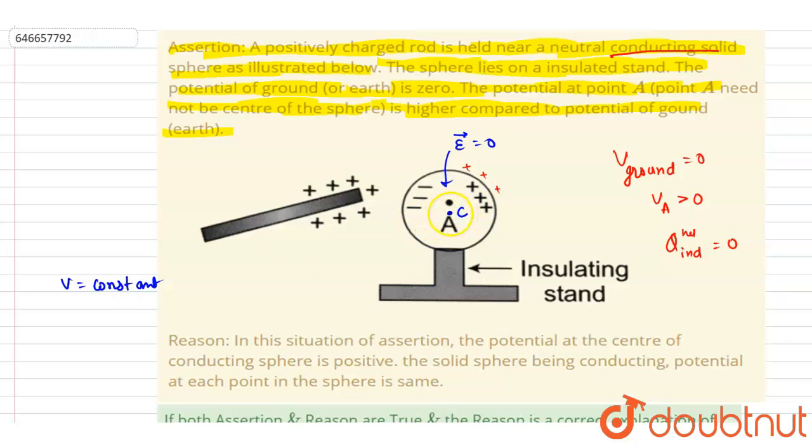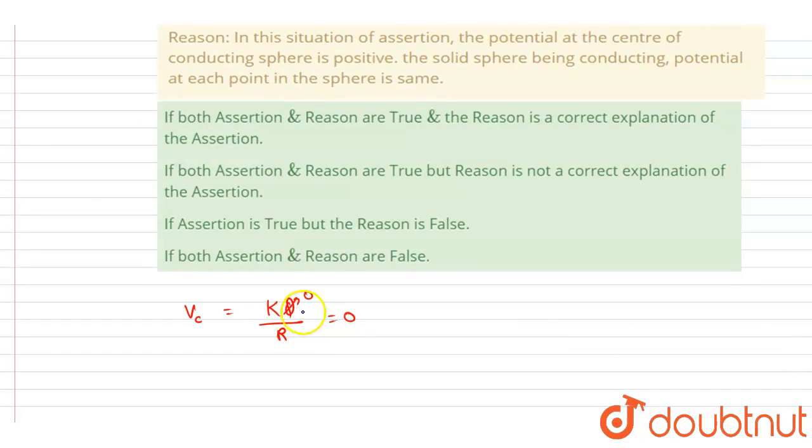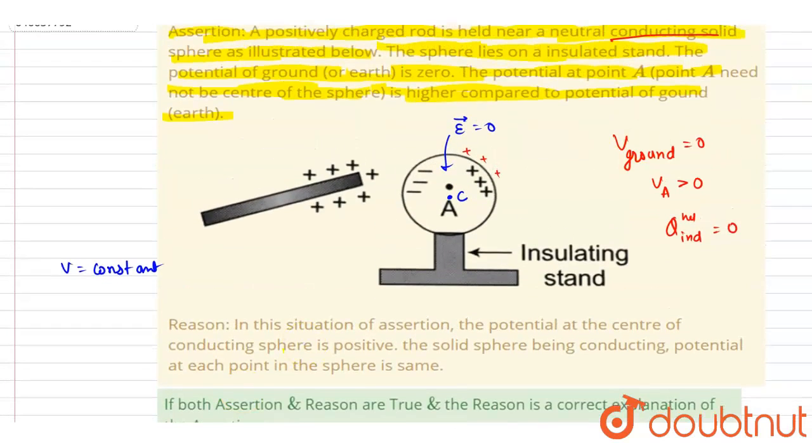It will be constant throughout. So let us find out the potential at the center. Whatever potential will be at the center, it will be at A, B, C, whatever point we select inside the conductor. So if you see, we already have seen that because of the induced charge there will be no potential.